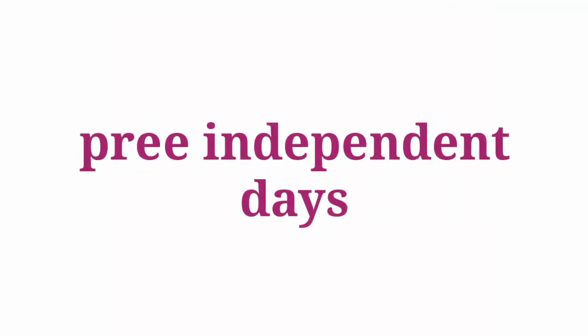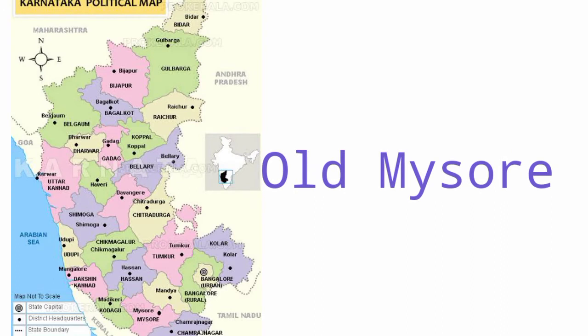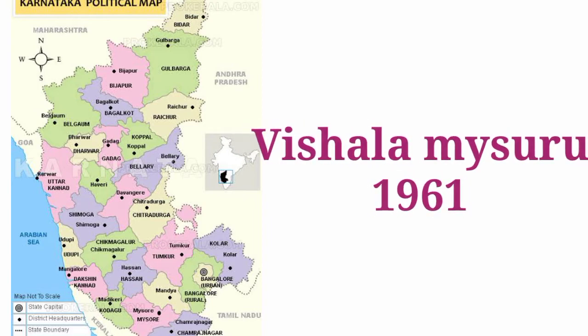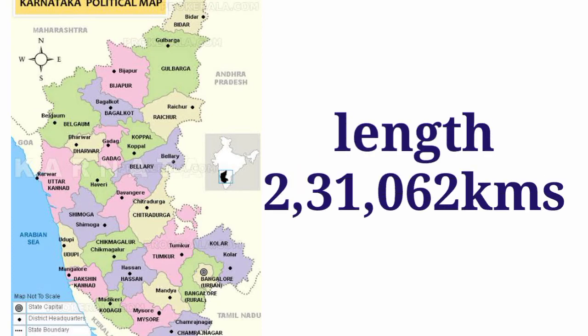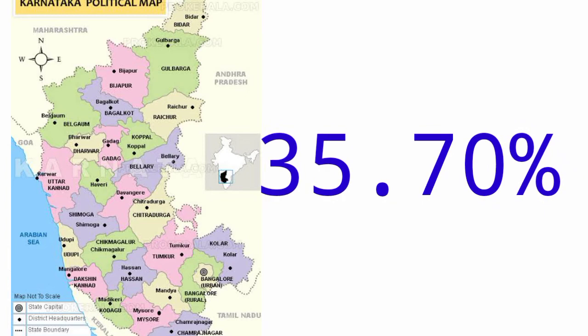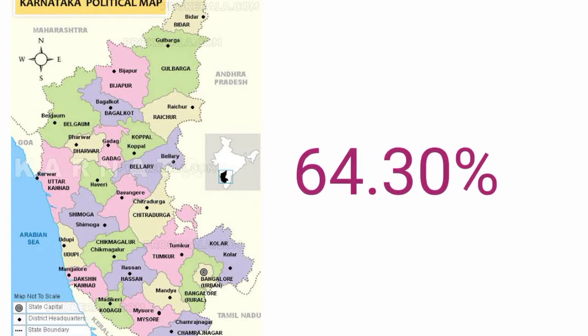However, the roads were not much developed in the pre-independence days. In Karnataka, roads linked the old Mysore provinces but were not well organized. After independence, when Vishala Mysore State was formed in 1961, a total of 43,182 kilometers of roads were laid. At present, the total length of roads is 2,31,062 kilometers, of which 35.70% are metalled roads and 64.30% are unmetalled roads in Karnataka.